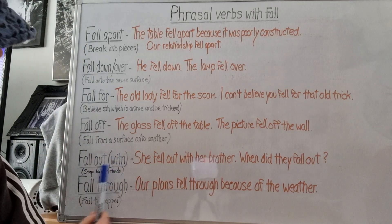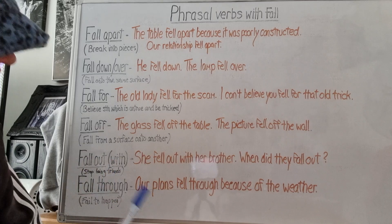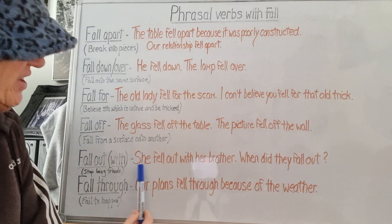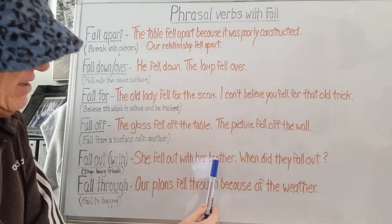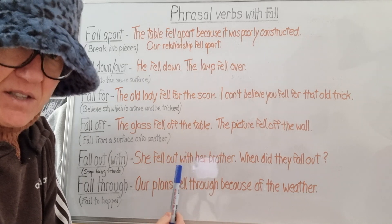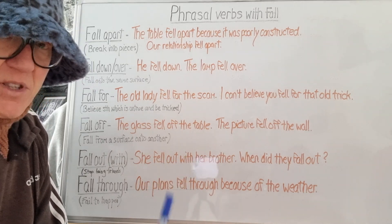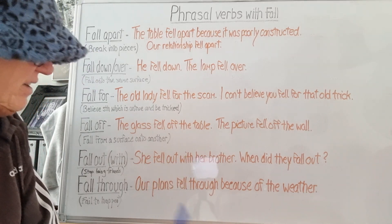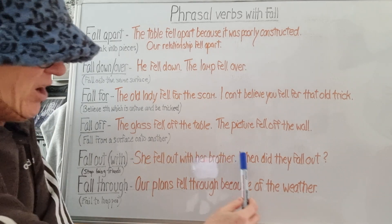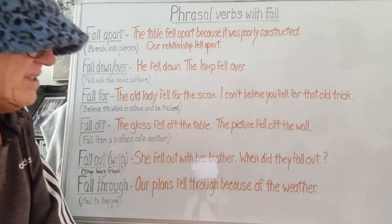'Fall out with' is to stop being friends or friendly. She fell out with her brother — they had an argument, they stopped talking, they stopped being friendly. When did they fall out?